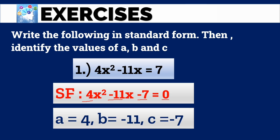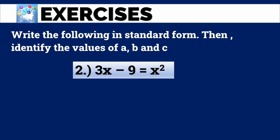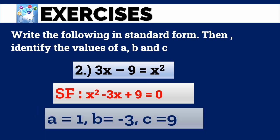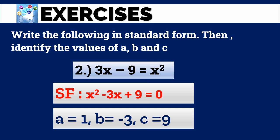Number 2: 3x - 9 = x². The answer is x² - 3x + 9 = 0. A is 1, B is negative 3, and C is 9. Remember, when x² appears alone, there is an invisible coefficient of 1, so A equals 1.